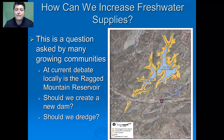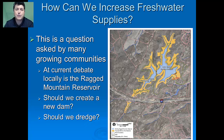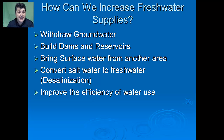Our focus has been on the Ragged Mountain Reservoir. There was debate about whether to dredge it to increase depth or build a new dam. Currently the plan is to raise the height of the dam for more volume. Raising the height of a dam or dredging are two ways to increase the amount of water available in a reservoir, but there are other strategies to ensure water access into the future.